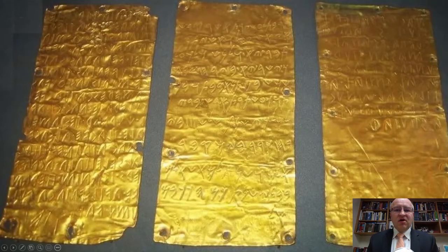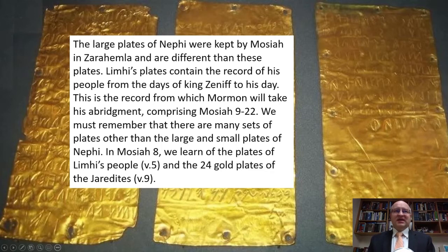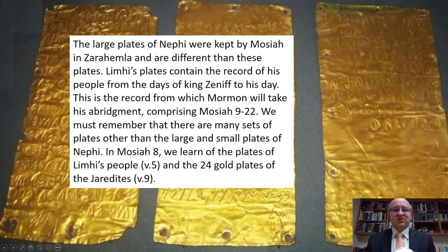There are also mentions of several different types of plates. You get the plates of Limhi's people and the plates of the Jaredites in chapter 8. The large plates of Nephi were kept by Mosiah and Zarahemla — they're different from these plates. Limhi's plates contain the record of his people from the days of King Zenith to his day. This is a record from which Mormon will take his abridgment, comprising chapters 9 through 22. In Mosiah 8, we learn the plates of Limhi's people (verse 5) and the 24 gold plates of the Jaredites (verse 9) are different.